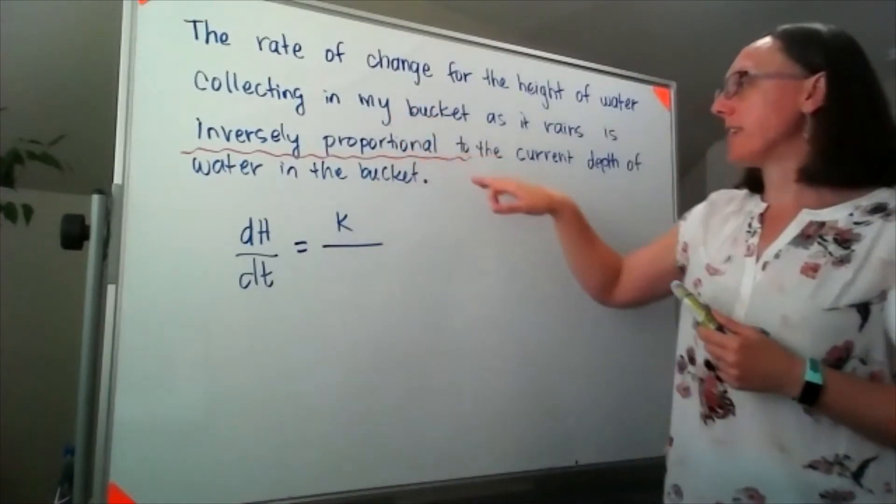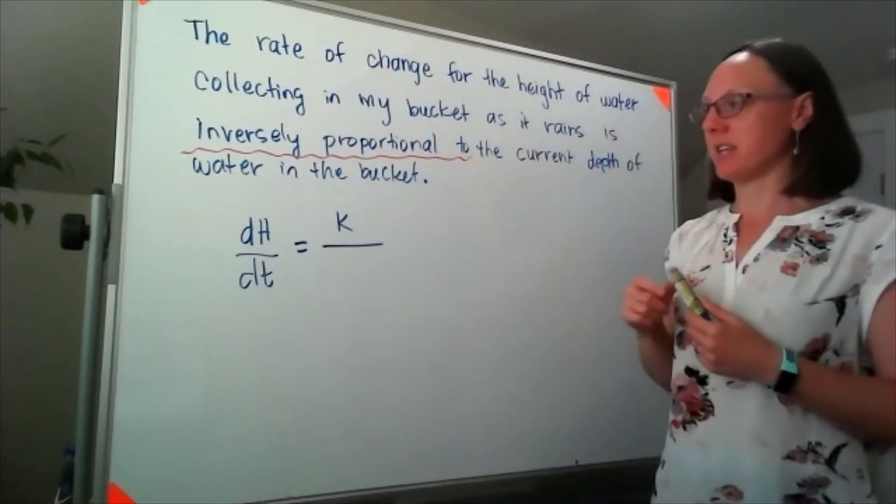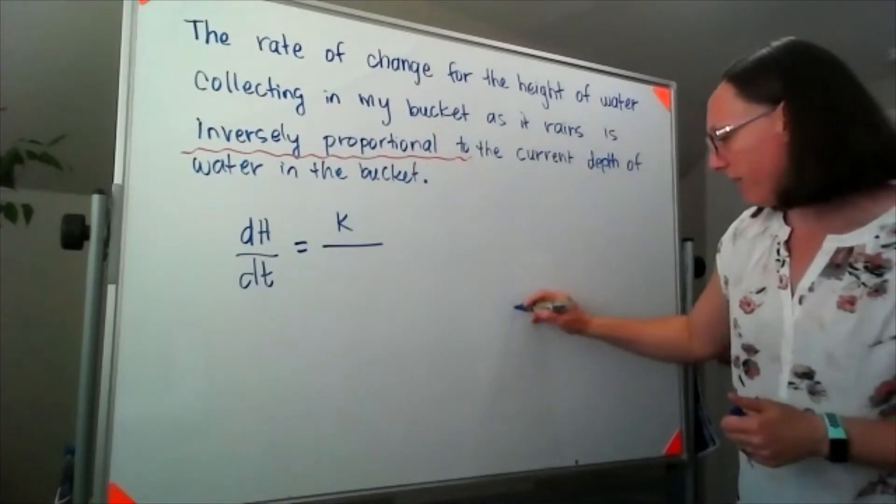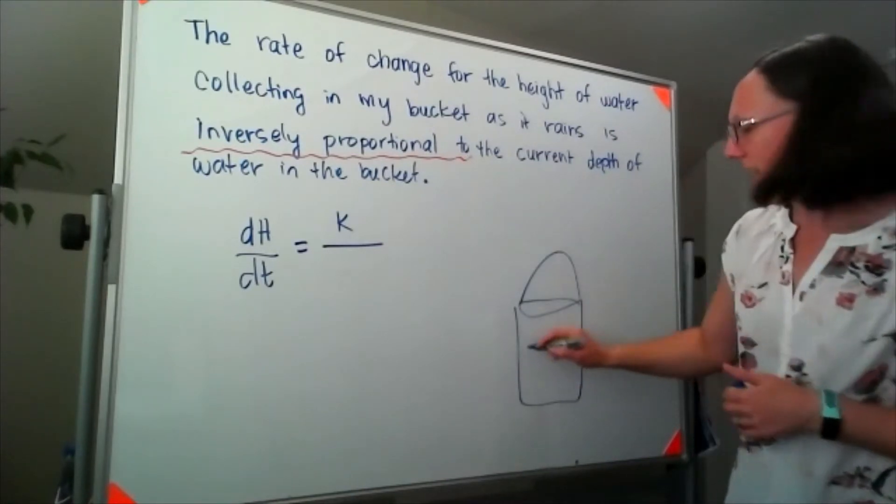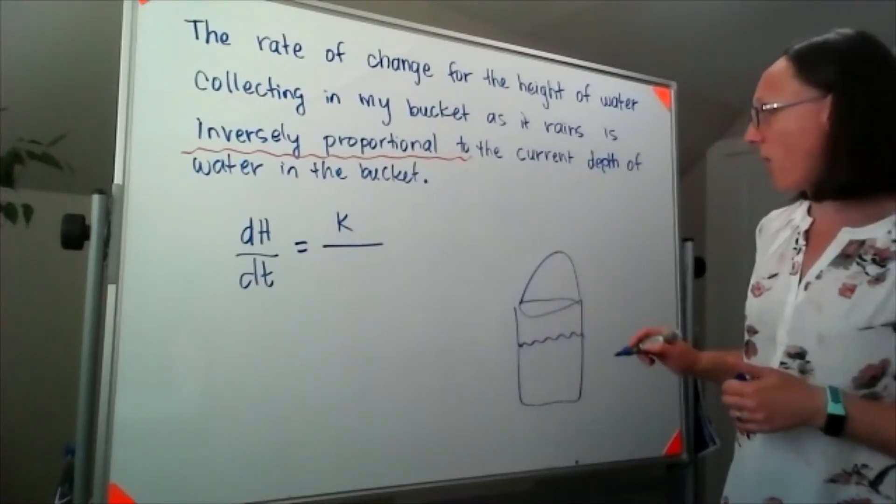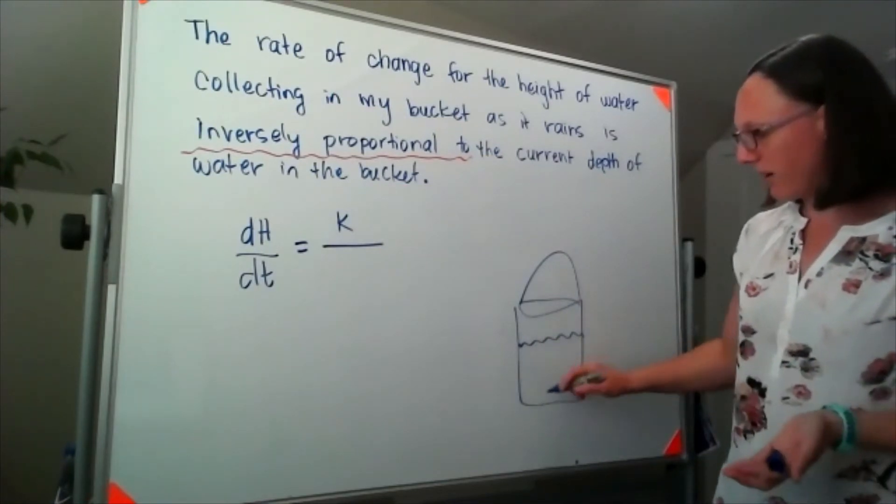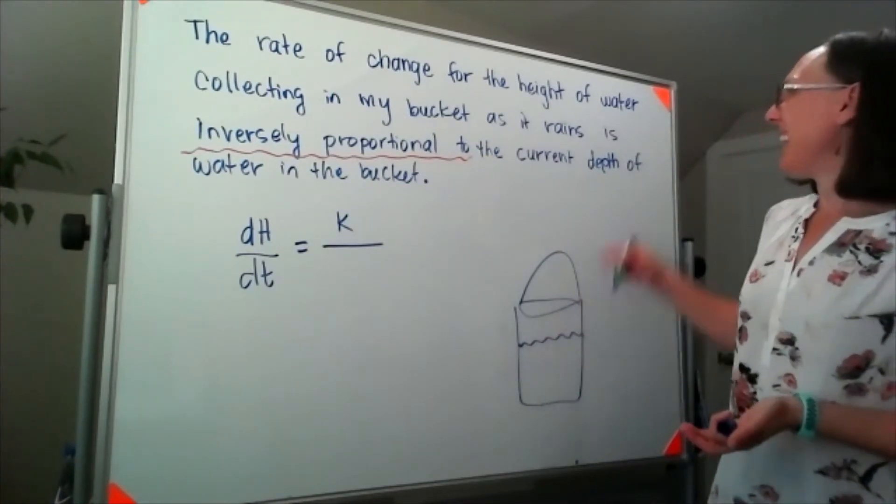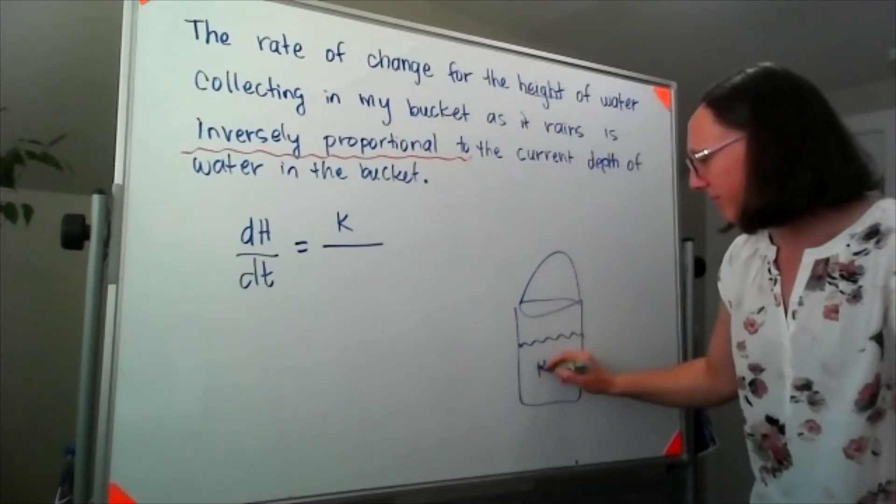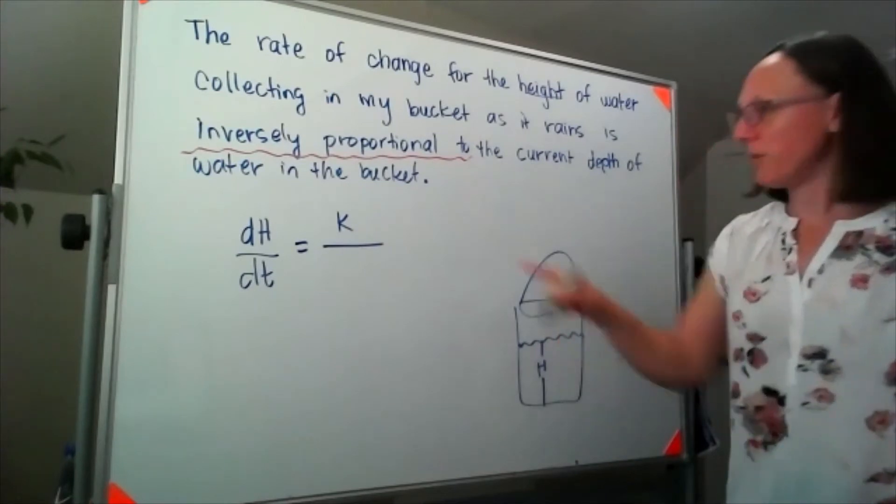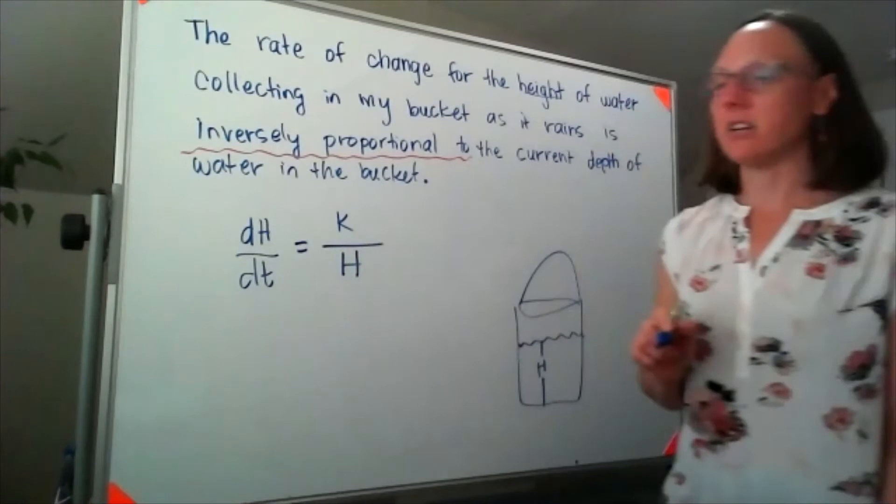We need this inversely proportional to the current depth of water in the bucket. If I think about my bucket, there's my bucket and here's the water, then the depth of the water in my bucket is really the height of the water in my bucket, which means I should be inversely proportional to h.